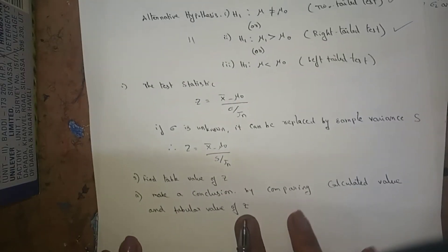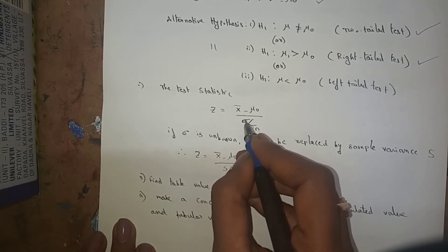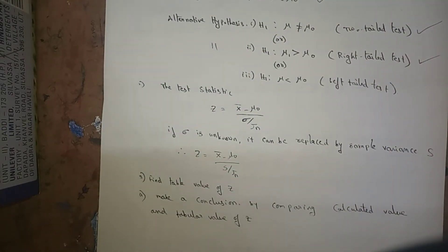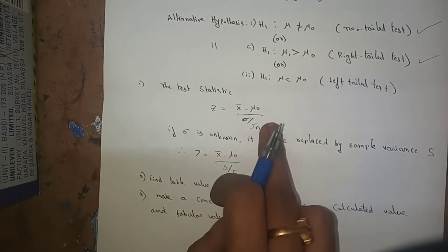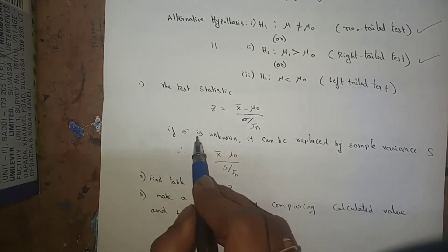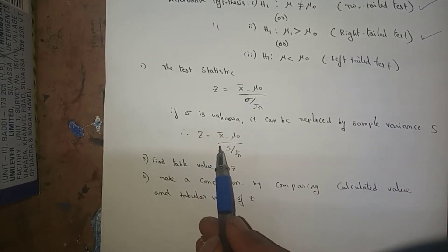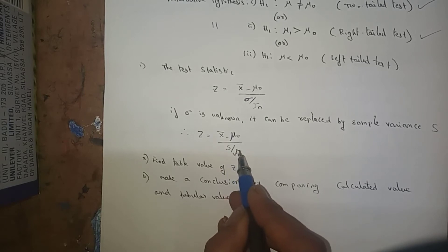The test statistic formula is: Z = (x-bar − mu naught) / (sigma / √n). Here, sigma is the standard deviation and sigma squared is the variance. If sigma is unknown, it can be replaced with the sample standard deviation S, giving Z = (x-bar − mu naught) / (S / √n).